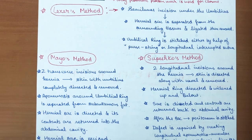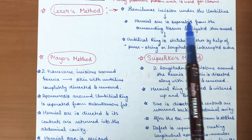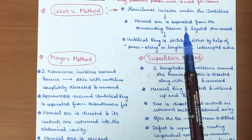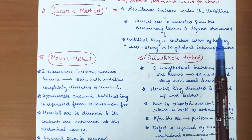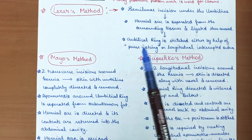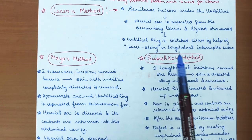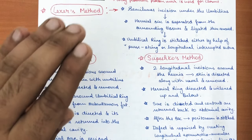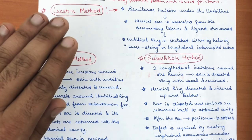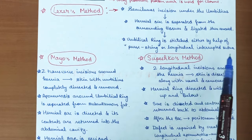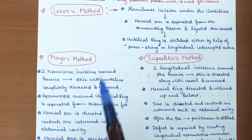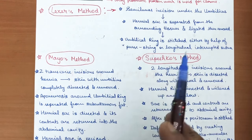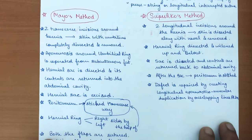In the Lexer method, a semi-lunar incision is made under the umbilicus. The hernia sac is separated from surrounding tissue, ligated, and removed. The umbilical ring is then sutured using either a purse-string suture or longitudinal interrupted sutures to close the defect.